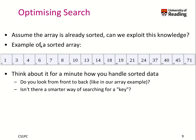Let's go back to our search now. Let's assume our array is already sorted. Here we see an example, sorted array. Think about it for a minute now, how you can handle the sorted data. Would you really go from front to back if you search for something? Like, let's say you search for 15. Is 15 in this set of numbers? Would you go step by step from the left until you find out that 15 isn't in this array? Or is there a smarter way of searching for a key? I am quite confident that if you think about it for 1 to 2 minutes, you will find out a better way of doing this.